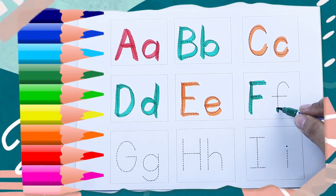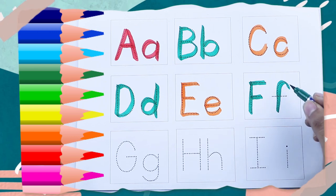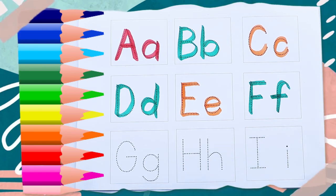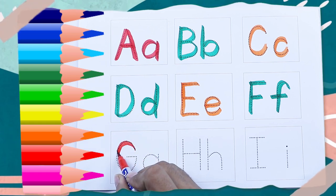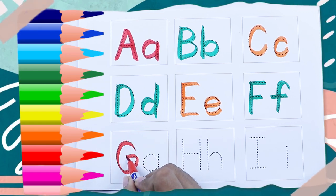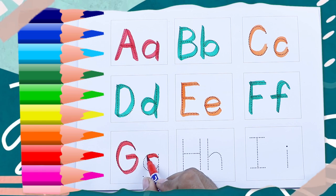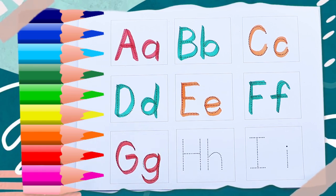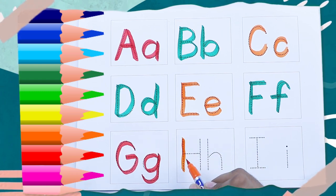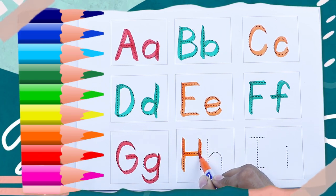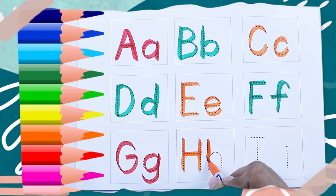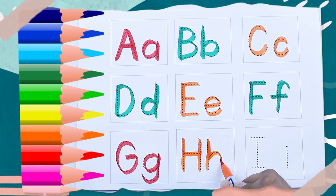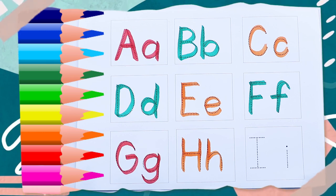Capital F, F for fish, green color. Small f, f for fish, red color. Capital G, G for goat, red color. Small g, g for goat. Capital H, H for hand, orange color. Small h, H for hand, orange color.